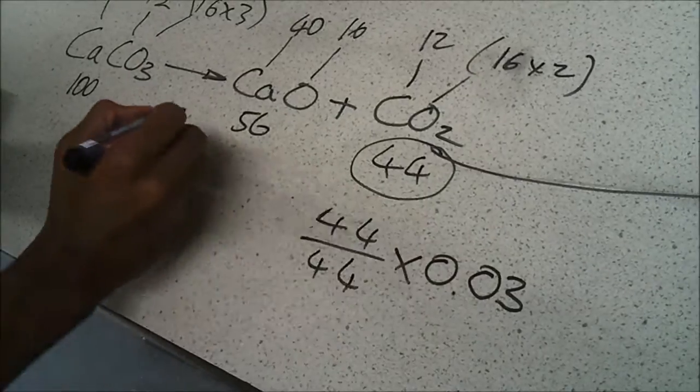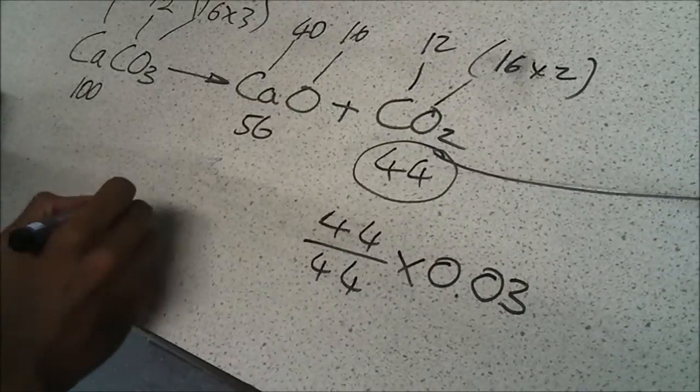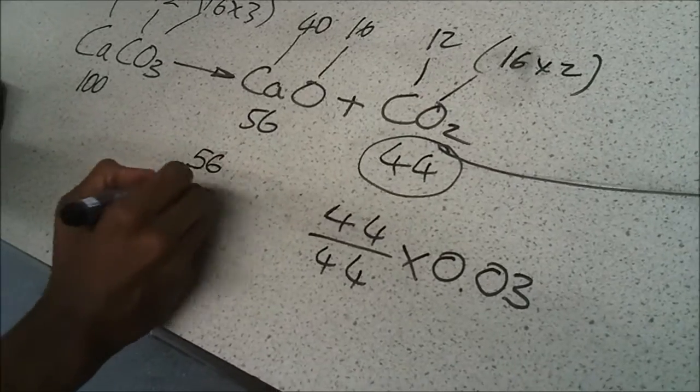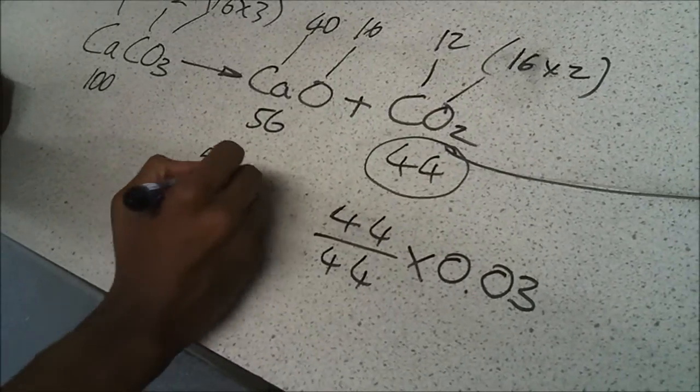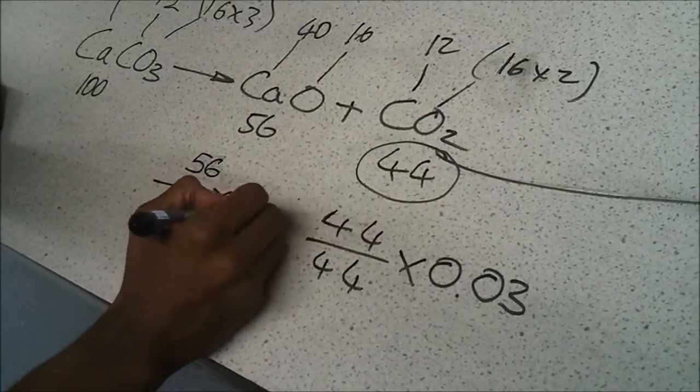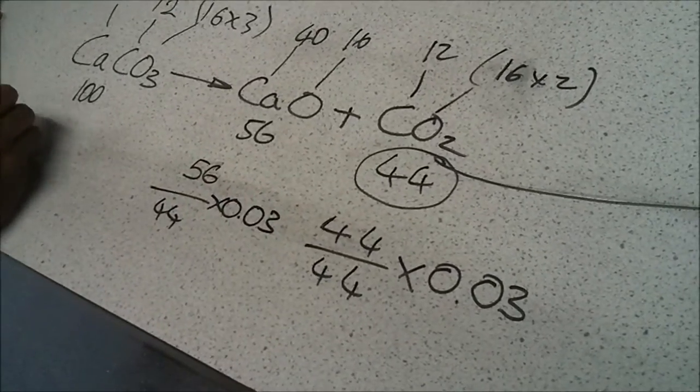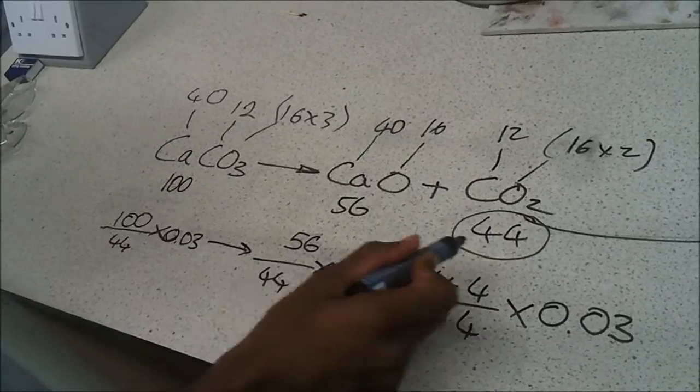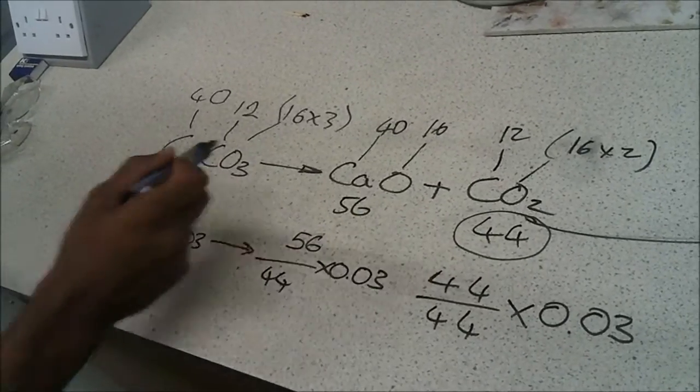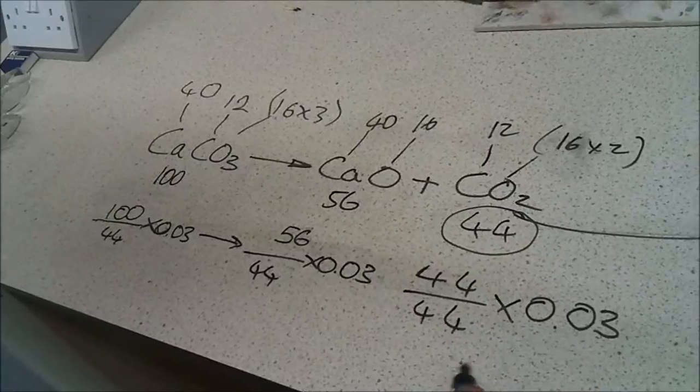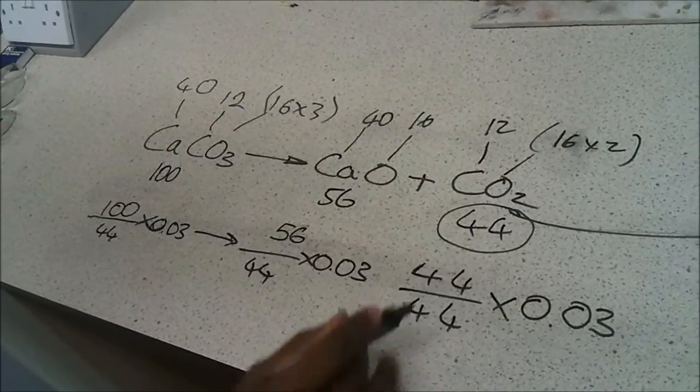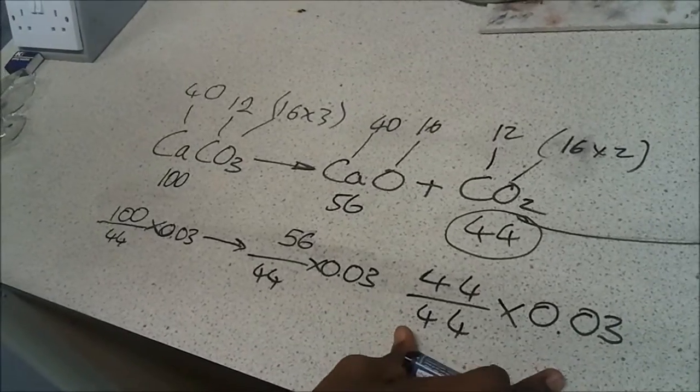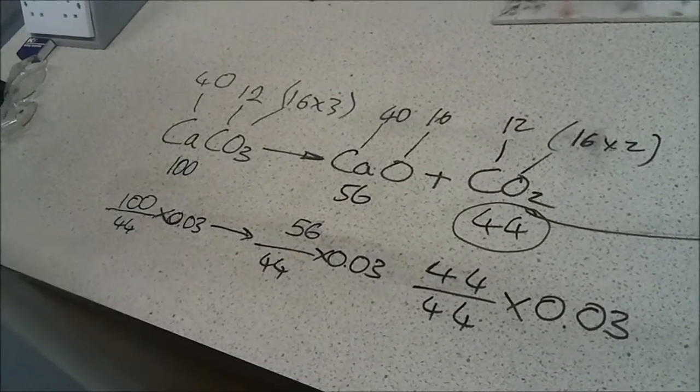OK, and whatever we do there, we have to do it to the rest. So, this will be 56 divided by 44 multiplied by 0.03. And we should do the same with this one. OK, so we've got each of these masses here, and we've actually divided it by 44 multiplied by 0.03. And whatever we did to that one, we must do to these as well.